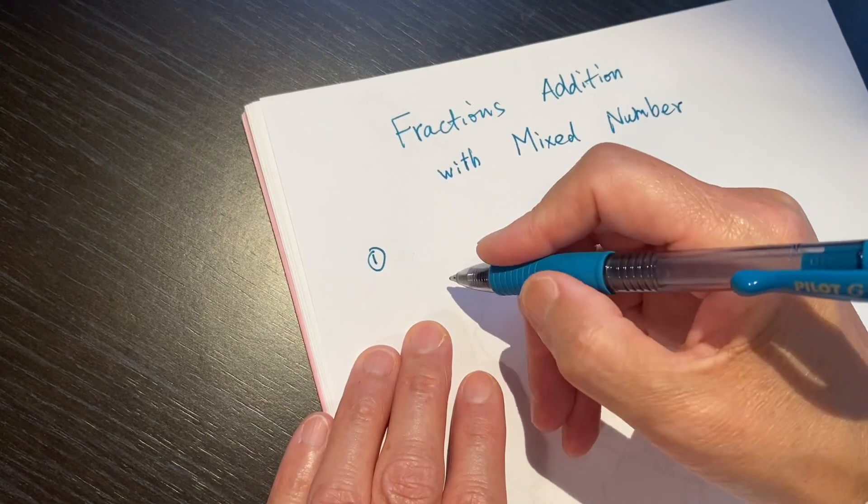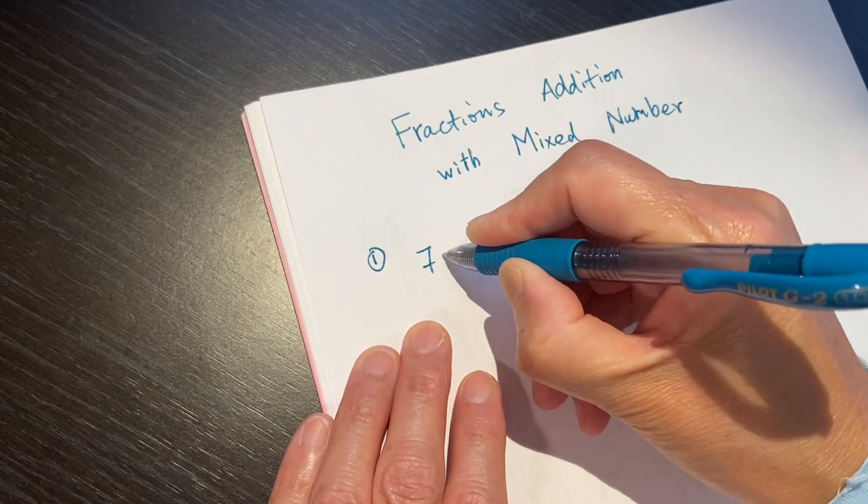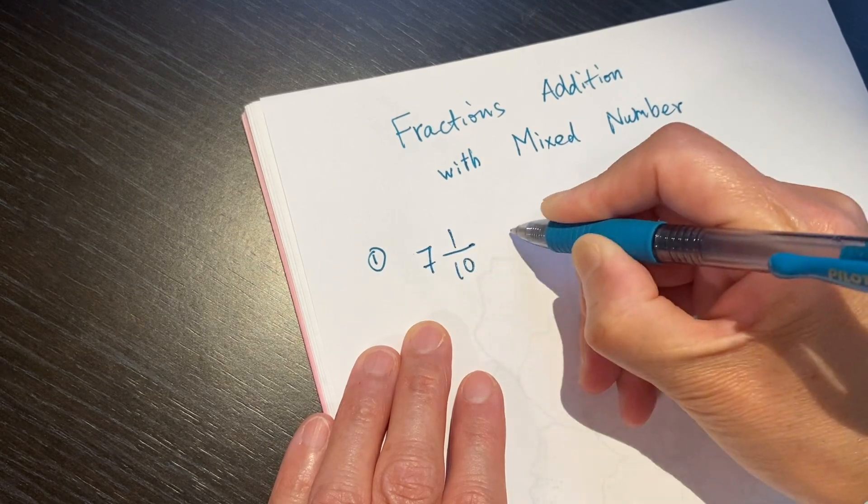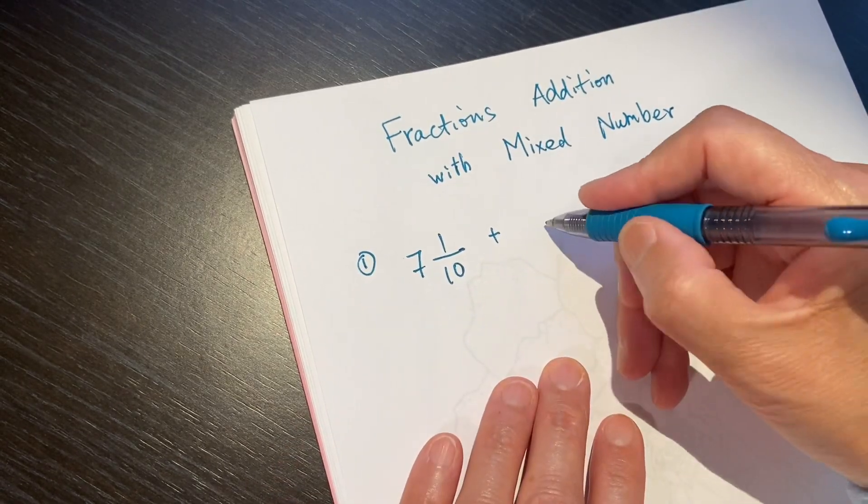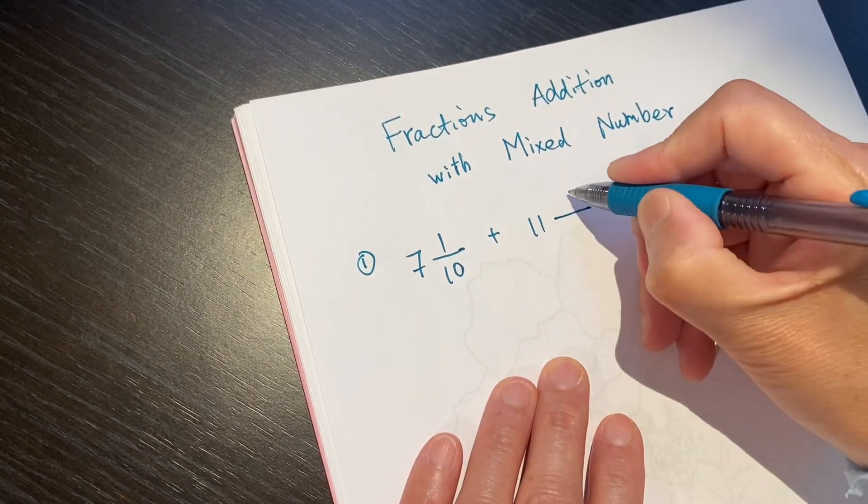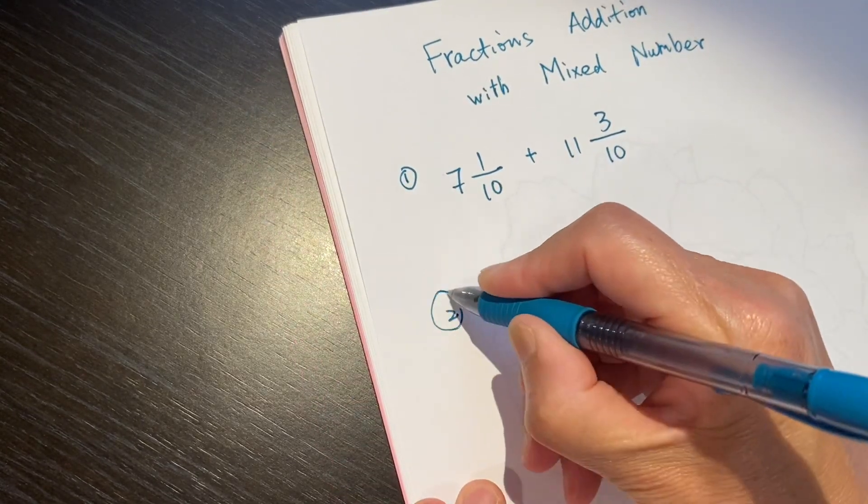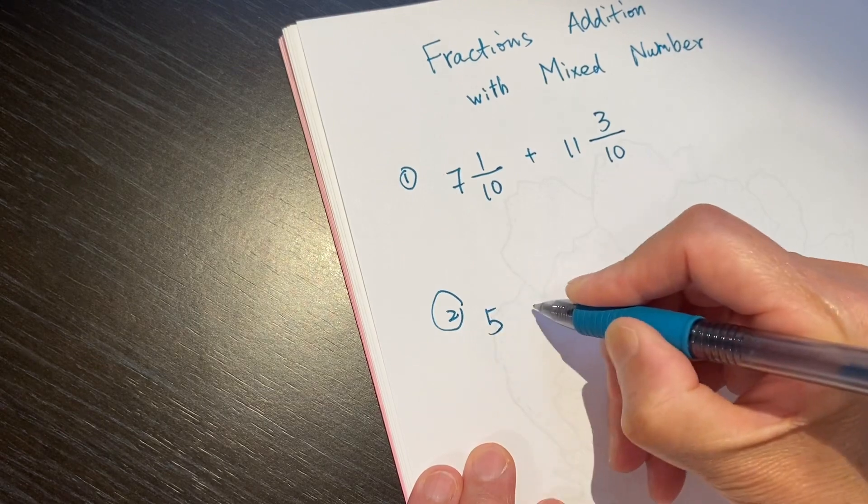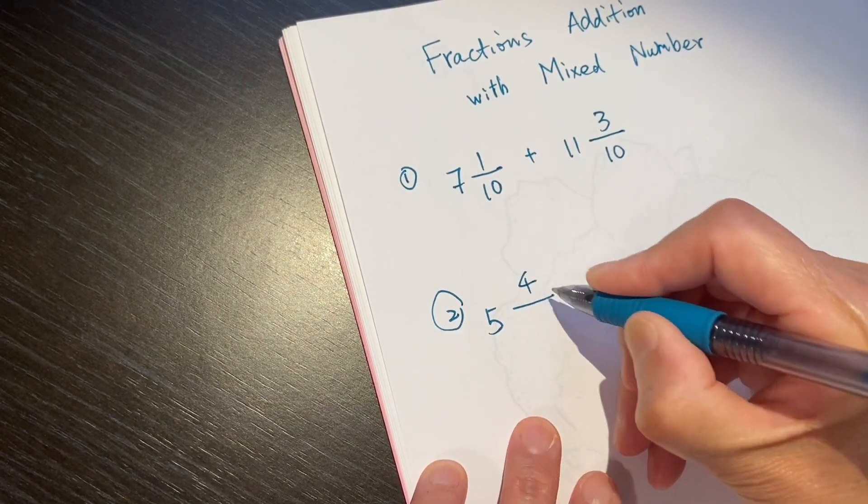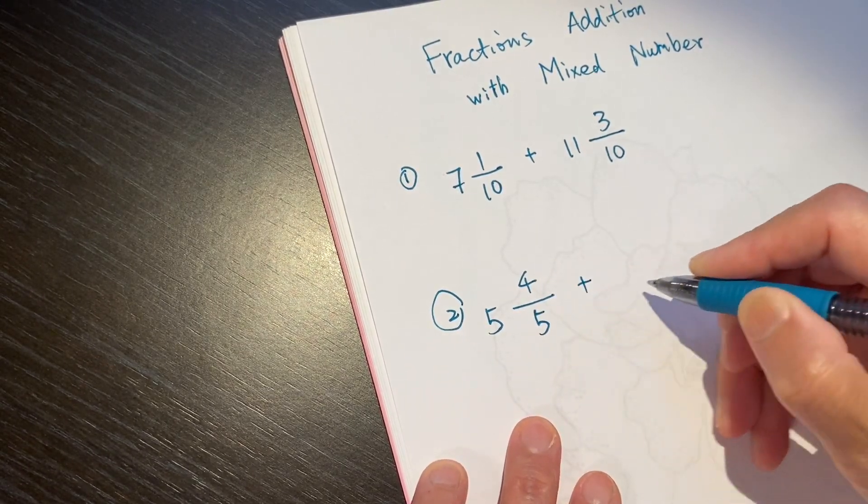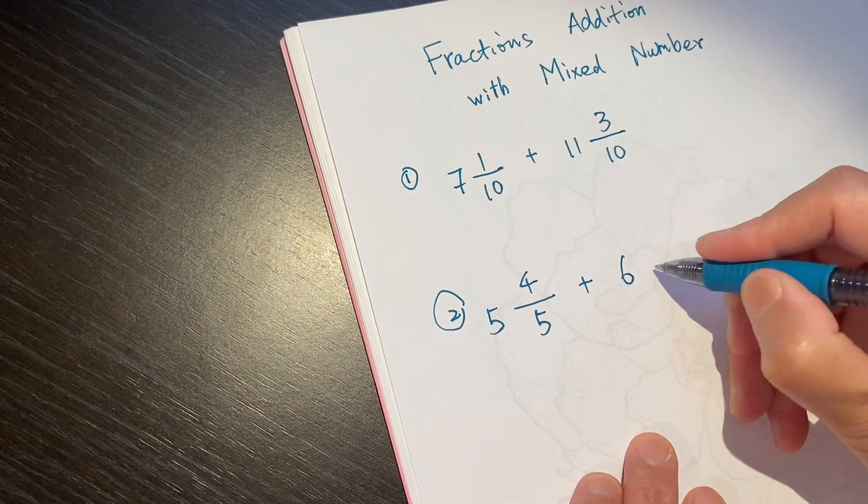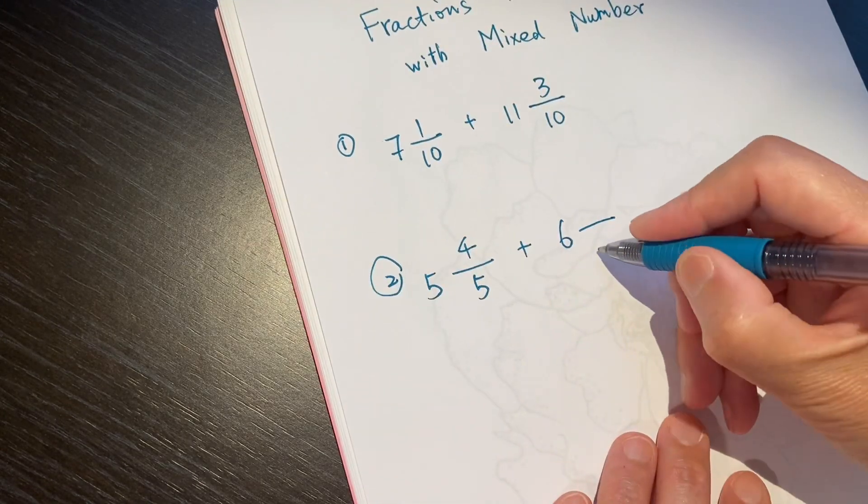The first one, 7 and 1 over 10 plus 11 and 3 over 10. The second question, 5 and 4 over 5 plus 6 and 4 over 15.